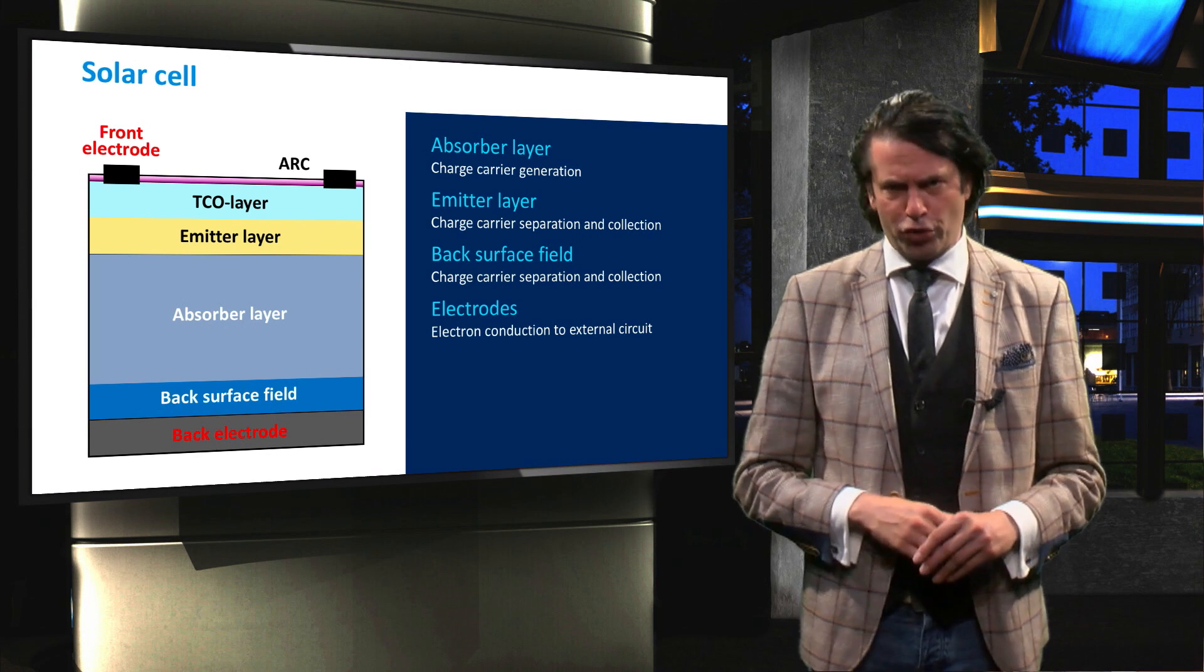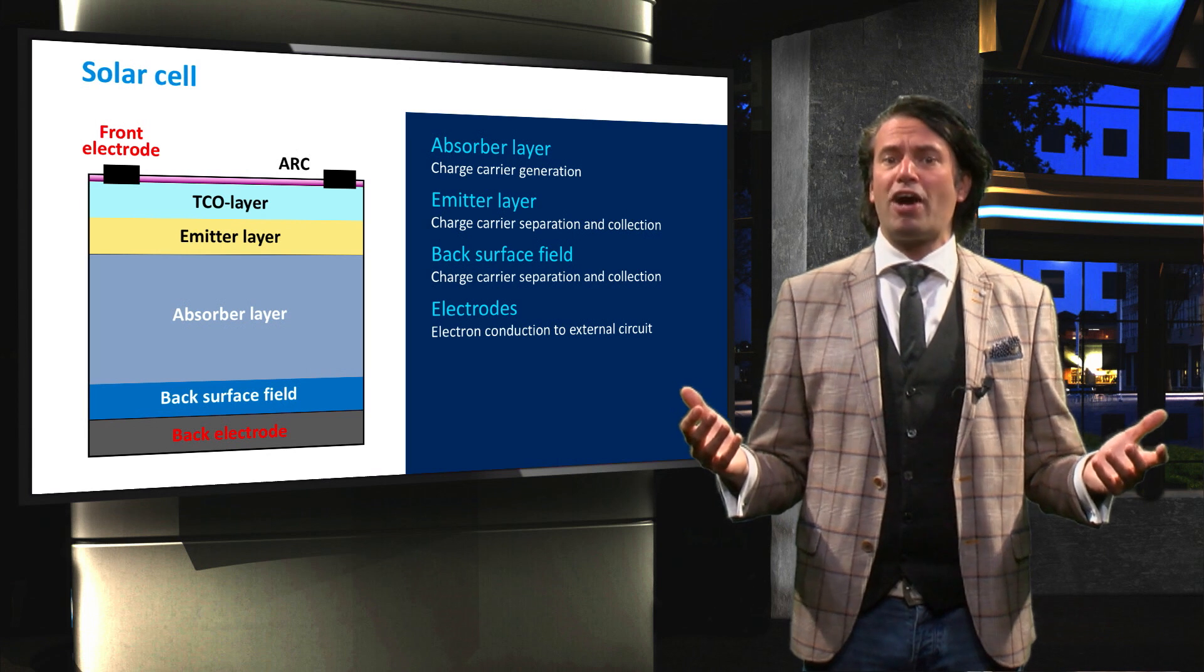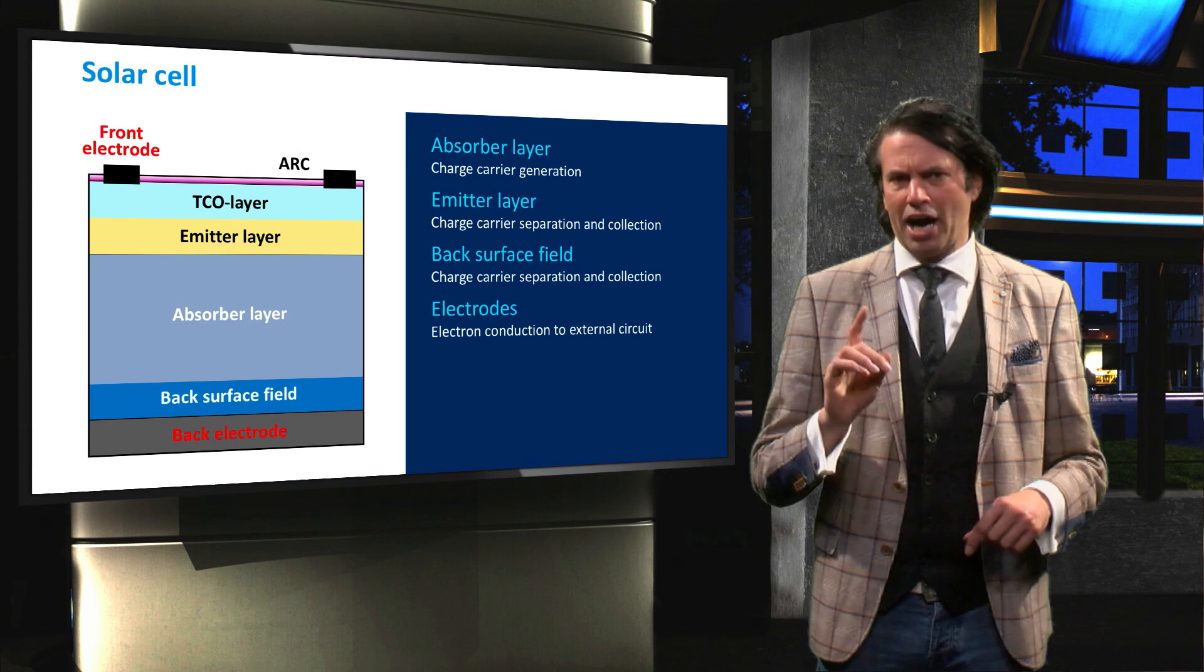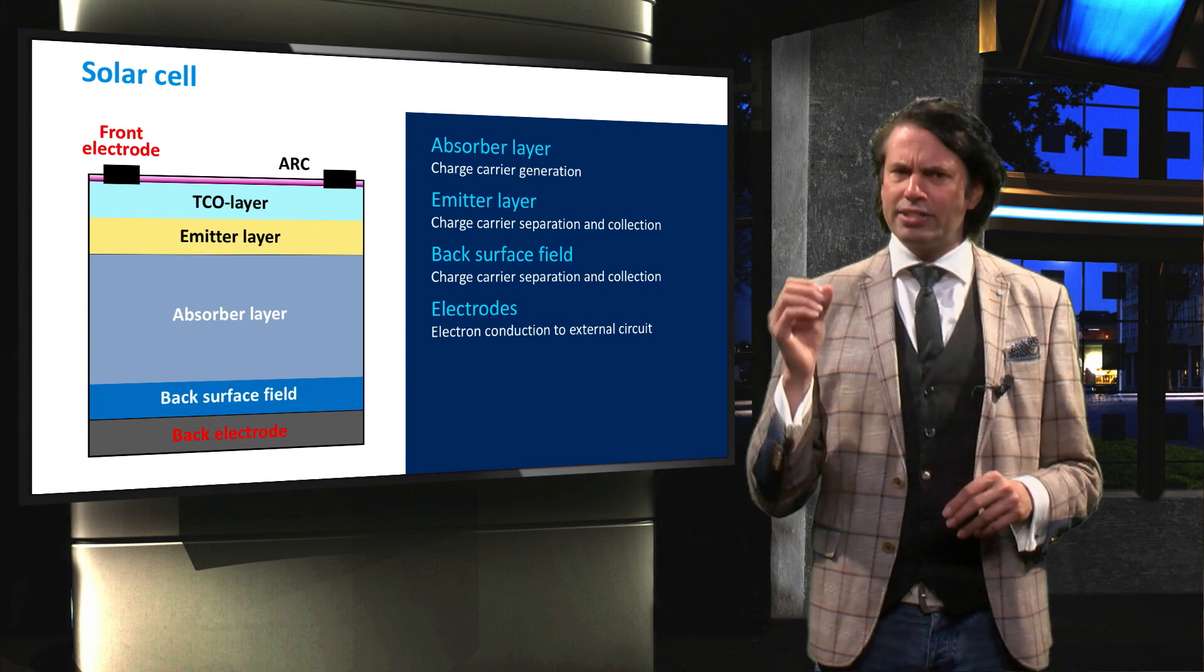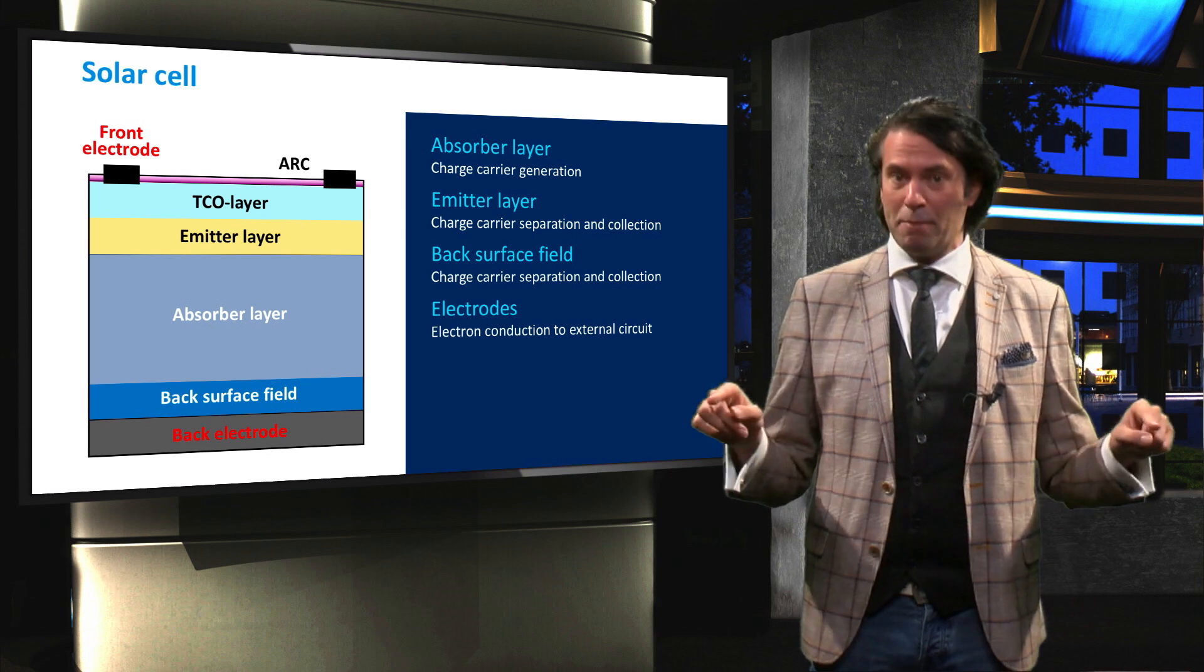Only a small fraction of the front surface is covered by electrodes. Charge carriers therefore have to move laterally to the front electrode. In a high quality crystalline silicon solar cell, this lateral charge carrier movement takes place in the emitter layer.